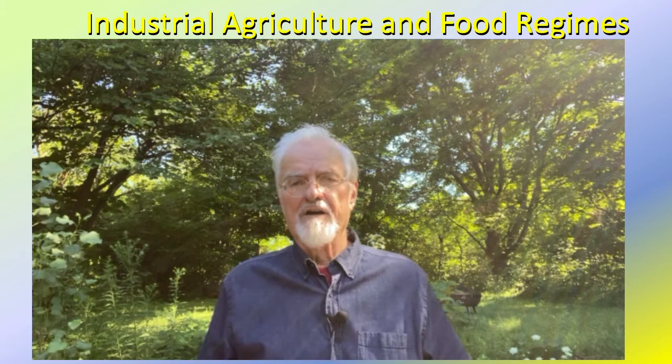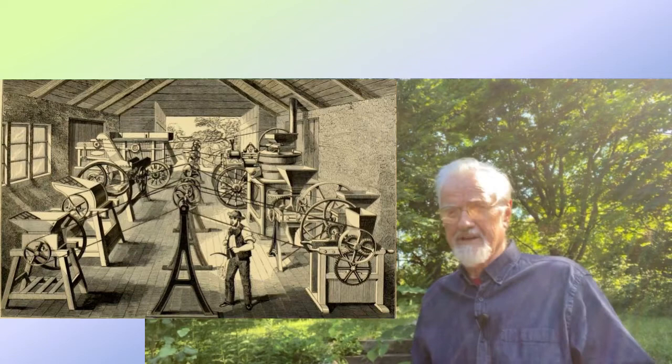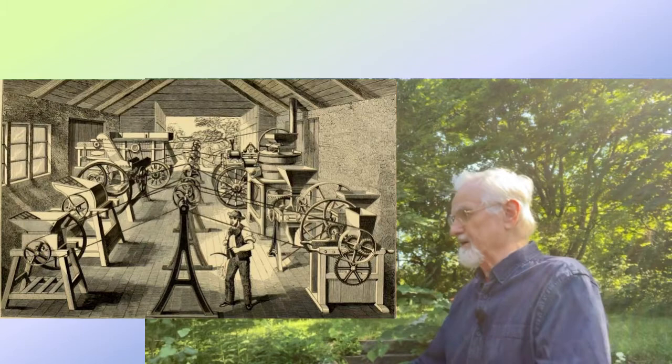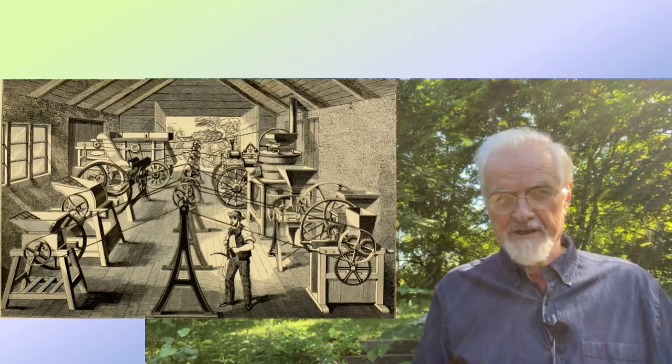Today we'll be talking about industrial agriculture and the whole idea of food regimes as a way of analyzing industrial agriculture. Going back to this cartoon — this was the way industrialists thought about agriculture somehow being brought into the growing industrial capitalist system. It didn't quite work out that way, but capitalism certainly did take over, and that's what we're going to talk about in the context of food regime theory.